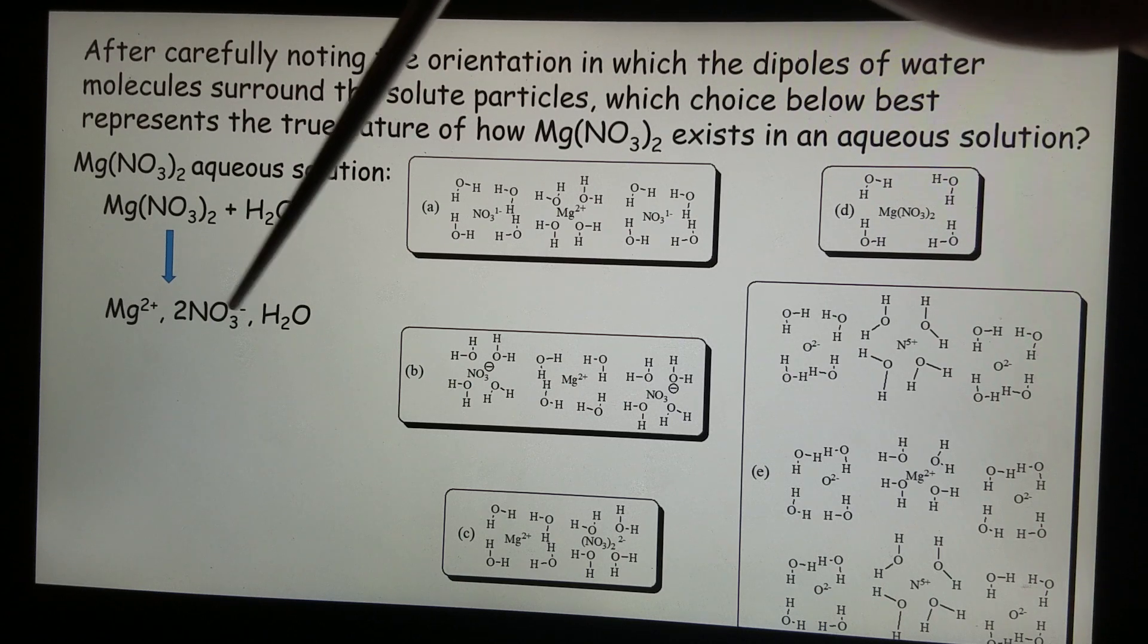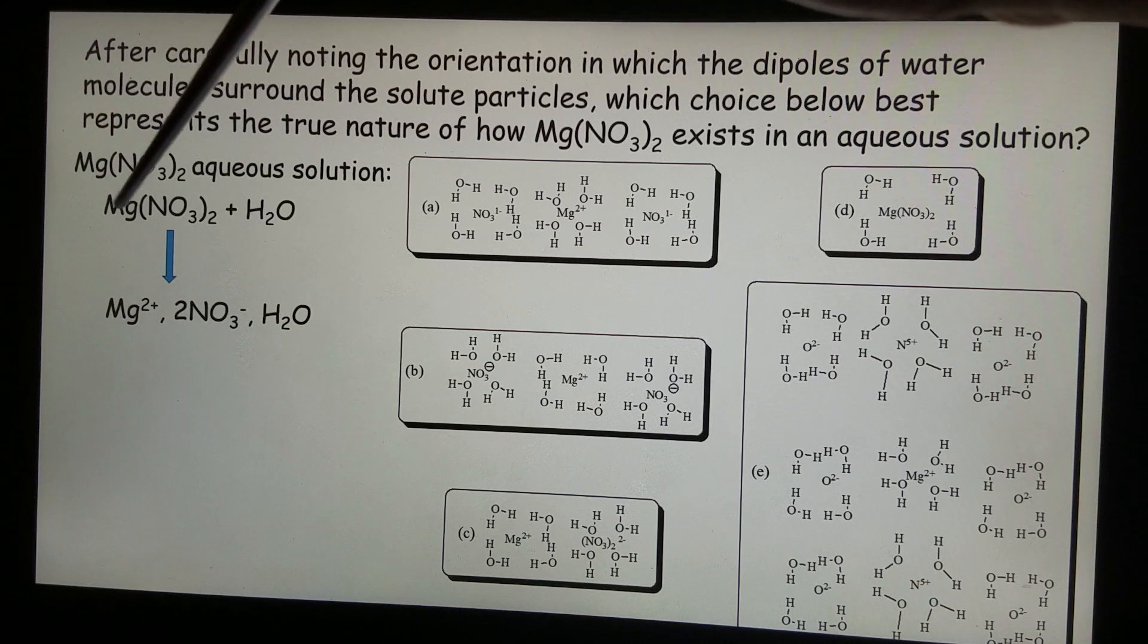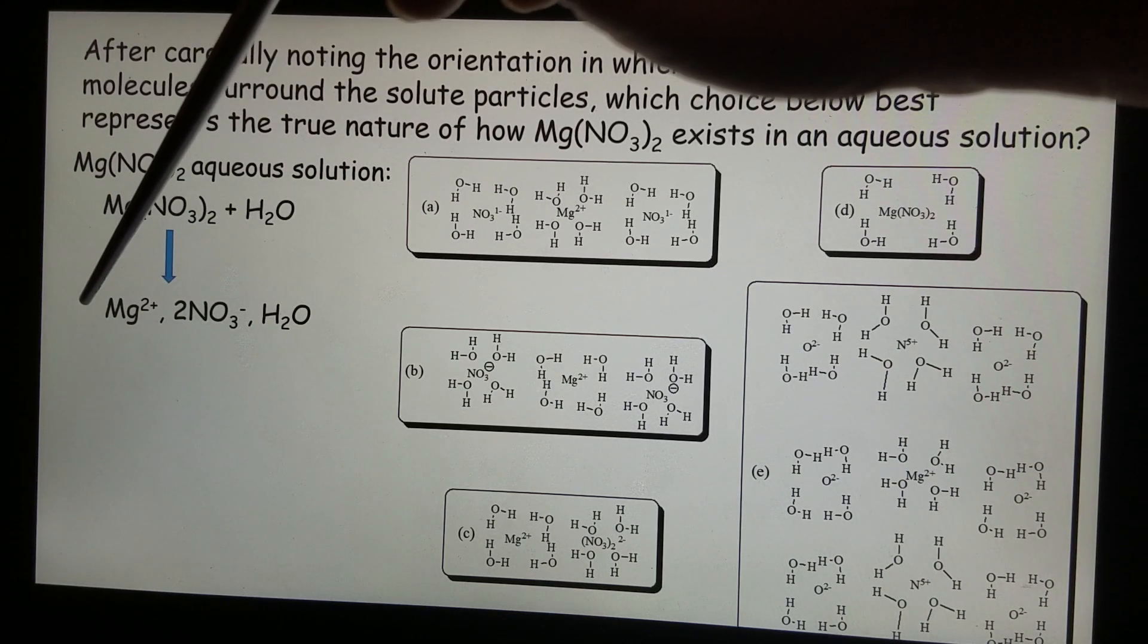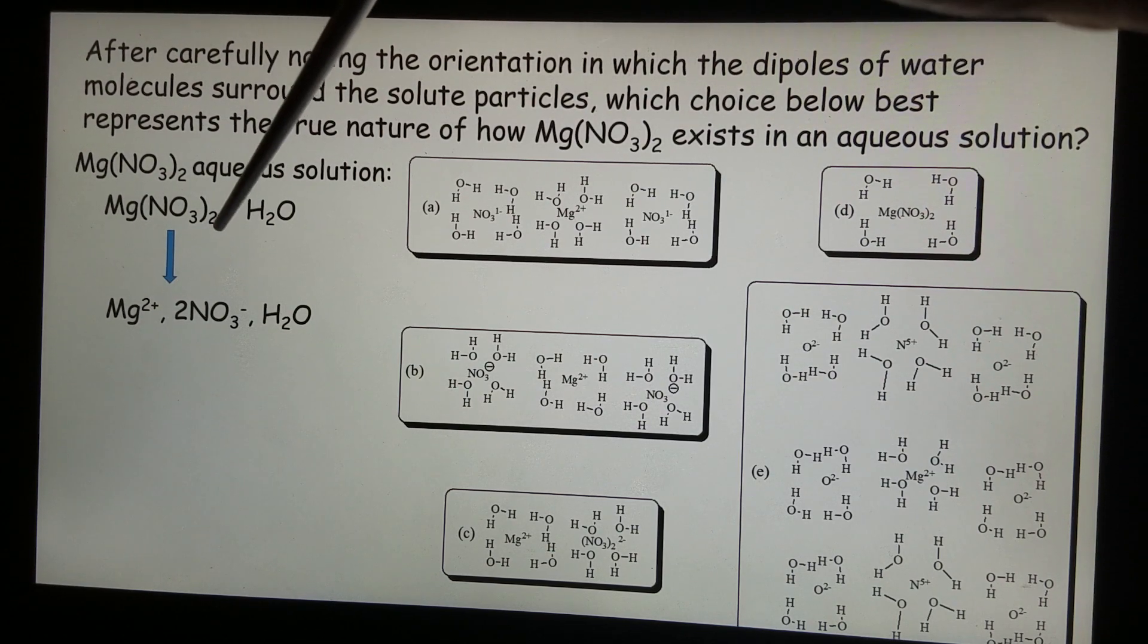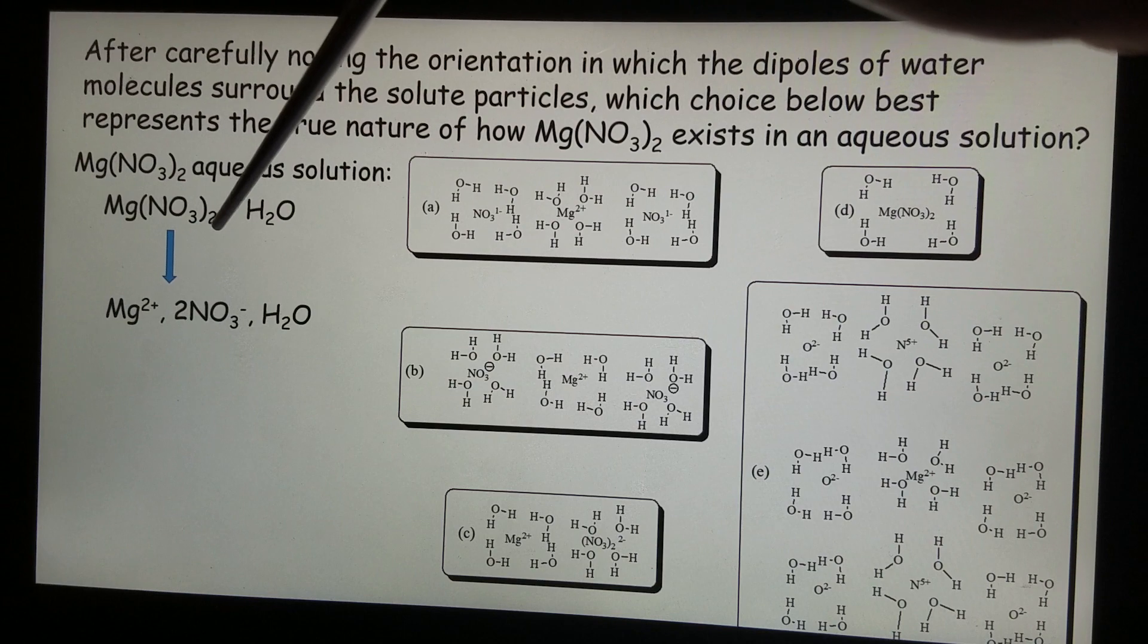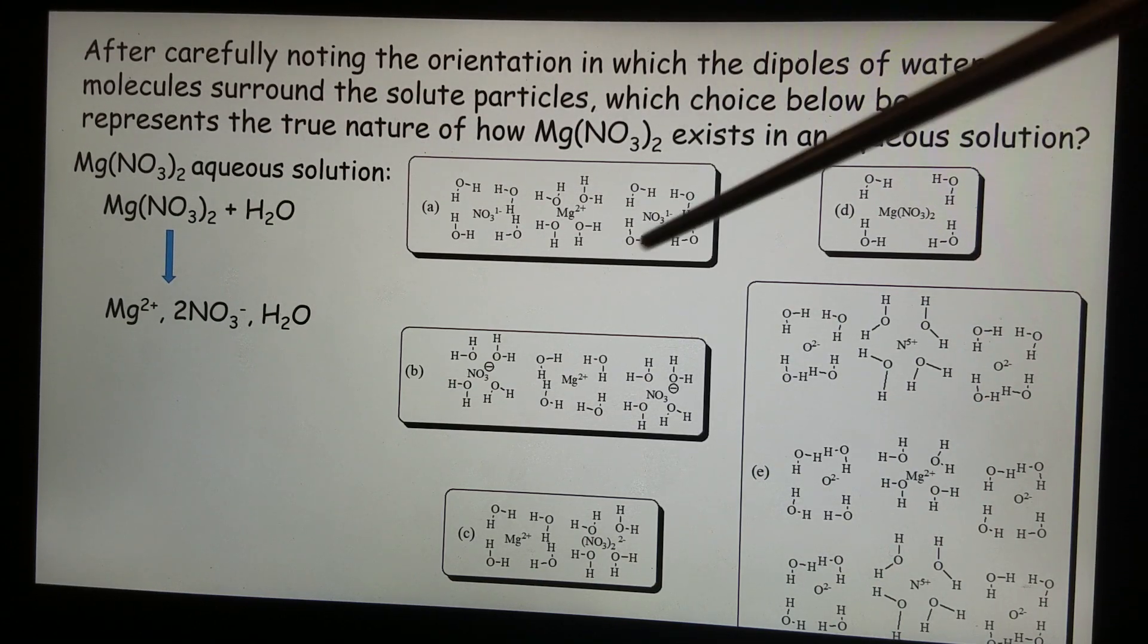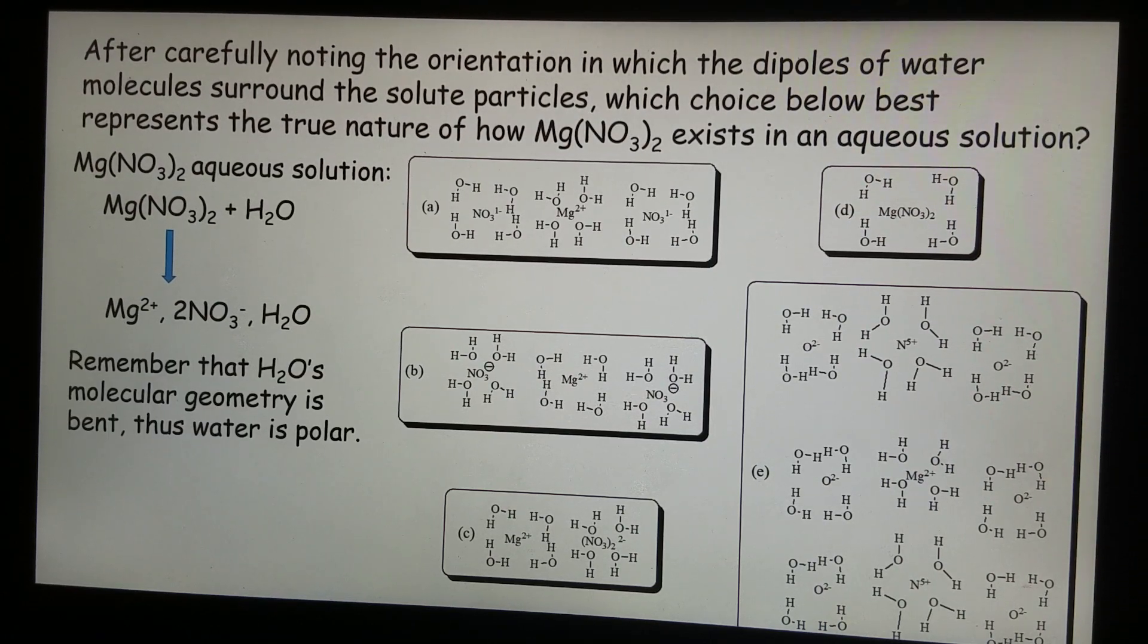So of course from one magnesium nitride formula, we should expect one magnesium 2 plus cation and two nitride ions. And of course we should also have plenty of water because that's the solvent.